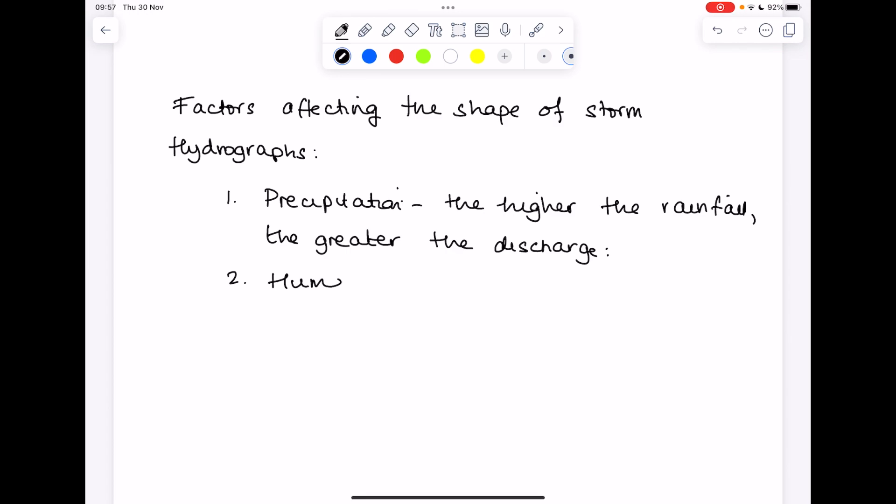Next up, human activities. Urbanization and deforestation both increase river discharge, and that's because of increased surface runoff.